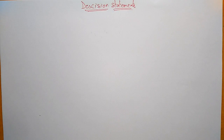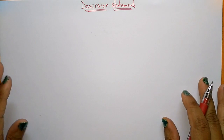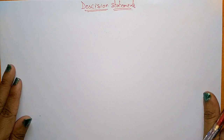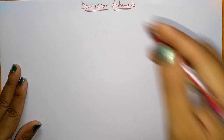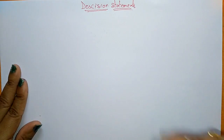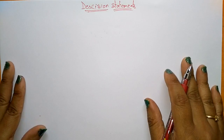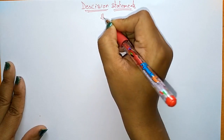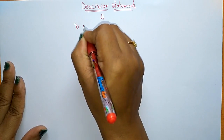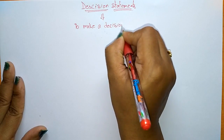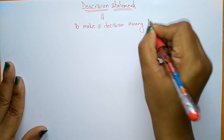Welcome students. The next topic in computer programming is decision statements. There are five different decision statements in C programming. The main use of these decision statements is to make a decision among alternative paths — when there is more than one path, we use decision statements.